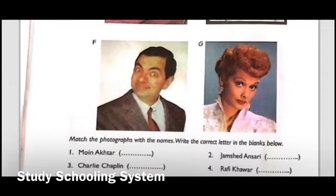Alphabet F is Rowan Atkinson, who is an English actor, comedian and writer. He is best known for his work as Mr. Bean. Most of you still watch his shows and laugh over his funny actions.